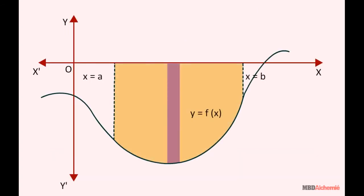In case the given curve is on the negative side of the axis, then we take modulus of the value obtained from integration, since the area cannot be negative.